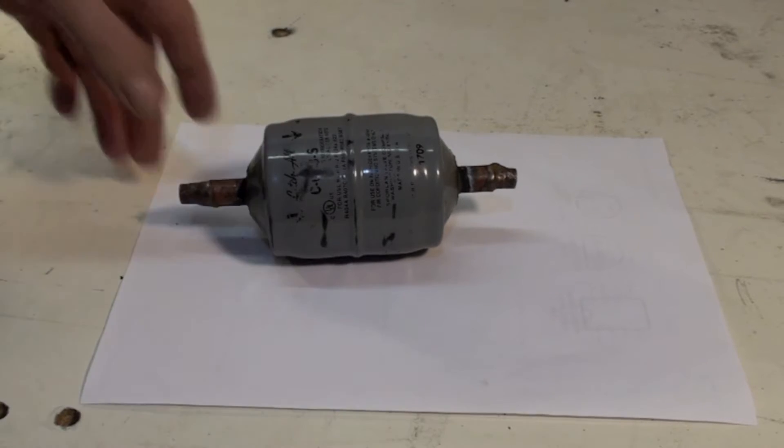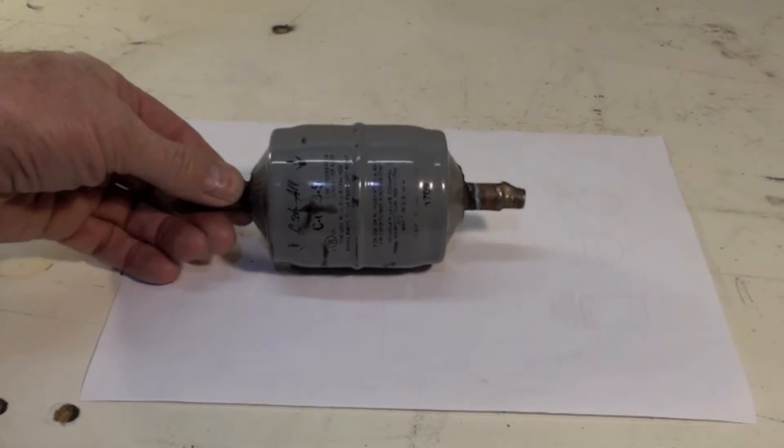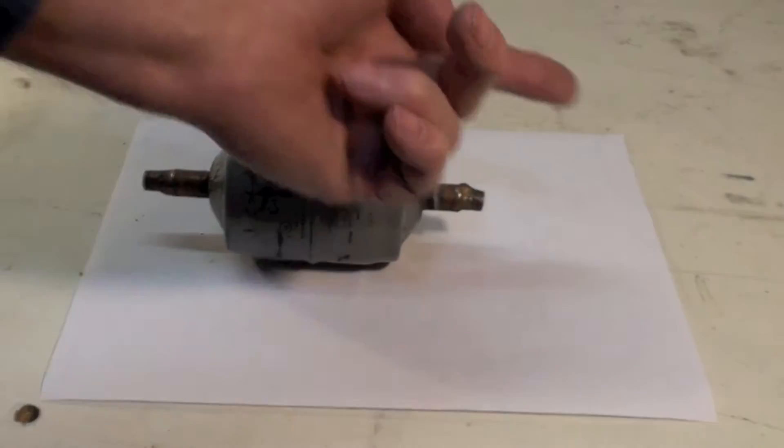You can see the arrows on this thing, liquid line dryer, so it's going this way.